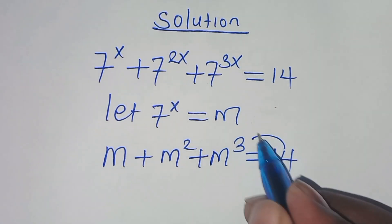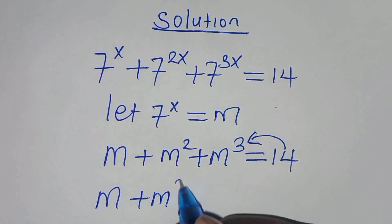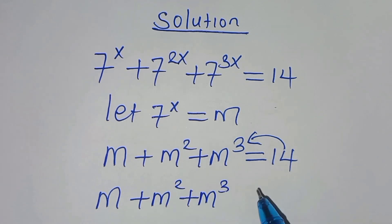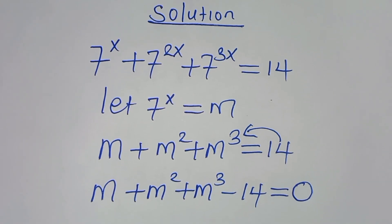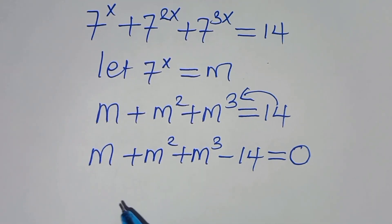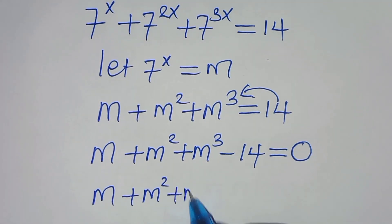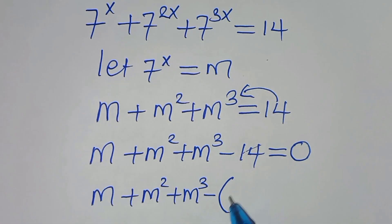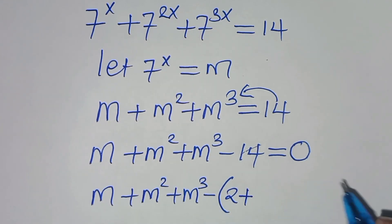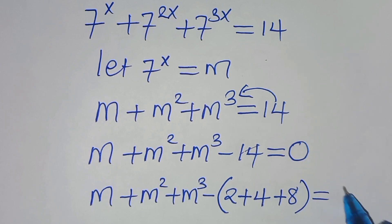The next step is to take 14 to the left-hand side, so we have m plus m squared plus m cubed minus 14 equals 0. Now, 14 can be expressed as 2 plus 4 plus 8, so this equals 0.